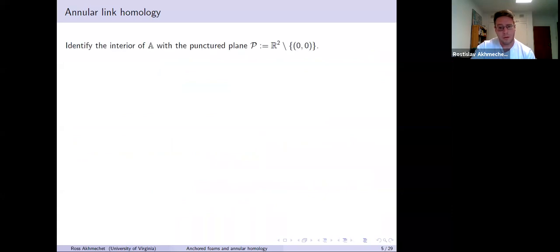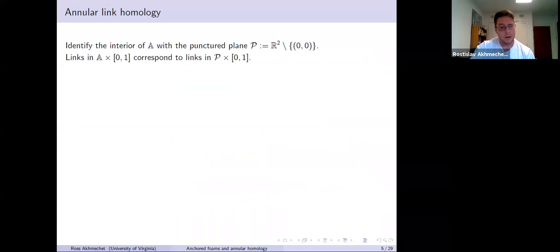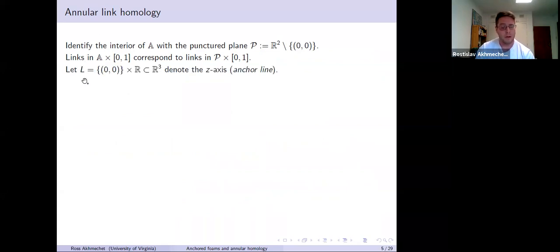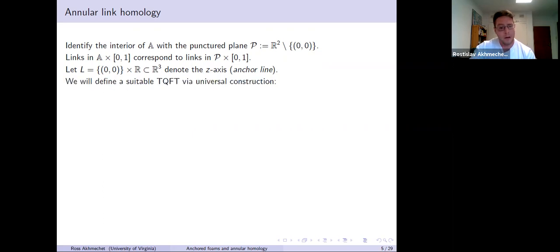Let me start discussing our setup. The perspective we take is to identify the interior of the annulus with the punctured plane, which I'll denote by script P. Links in the thickened annulus correspond to links in this thickened punctured plane — there's really no difference. I'll let L denote this line in R3, say the Z-axis, and we'll call it the anchor line. We're going to define a suitable TQFT using a universal construction, which I'll explain on the next slide.